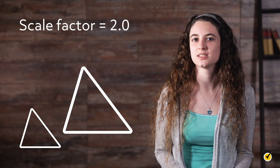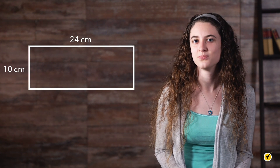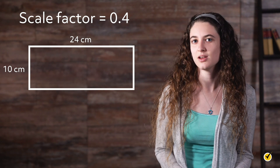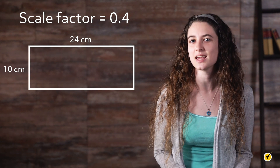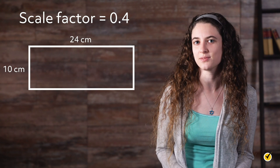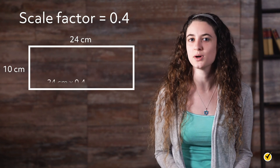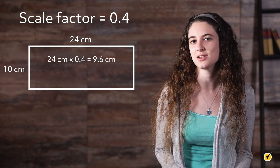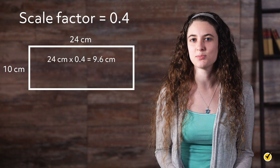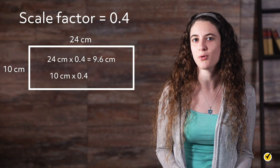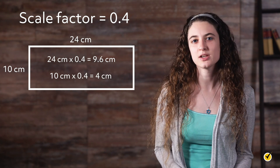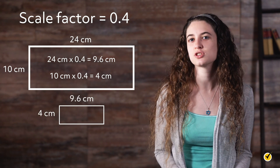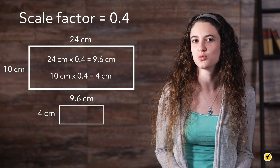Let's try a dilation on a simple polygon — a rectangle. We'll use a scale factor of 0.4, which should result in a smaller rectangle. Our first step is to multiply the length of each side by the scale factor. We'll start with the top and bottom by multiplying 24 centimeters times 0.4, which equals 9.6 centimeters. Now we'll do the sides by multiplying 10 centimeters by 0.4 to get 4 centimeters. Now we can draw our new rectangle. As you can see, we have a much smaller rectangle since the scale factor was less than 1.